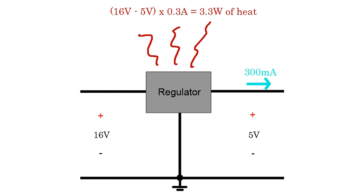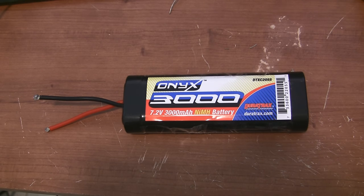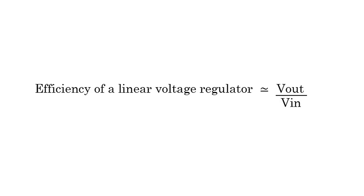Now let's see what happens when I use another input voltage that's closer to the 5 volt output that I want. This is a 7.2 volt nickel metal hydride battery, and when it's fully charged, it'll supply 8.4 volts. If I draw the same 300 milliamp load, I get a power dissipation of 1 watt, so I can get away with no heatsink at all. In general, you want to avoid high input voltages with linear regulators, because the higher the input voltage, the lower the efficiency.